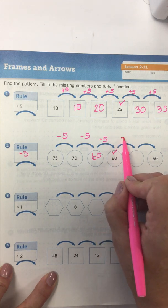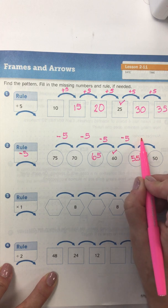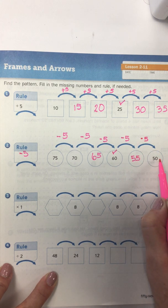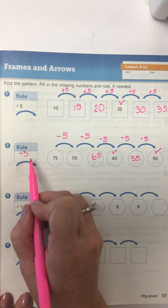60 subtract five would be 55. And 55 subtract five. Does that equal 50? Yes. So I'm going to check that. Then my rule is to subtract five.